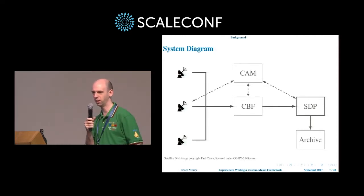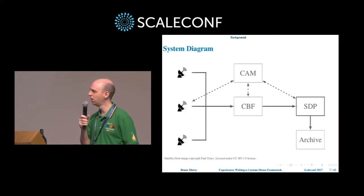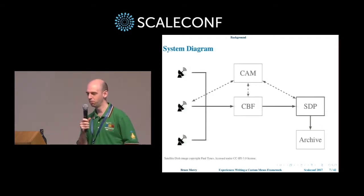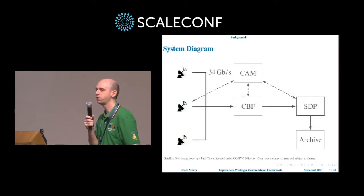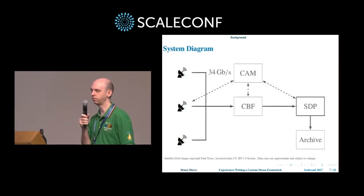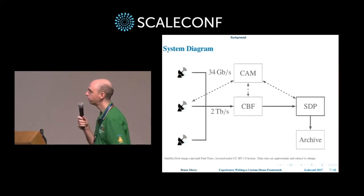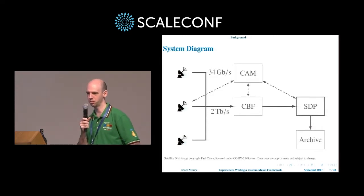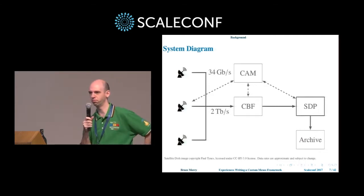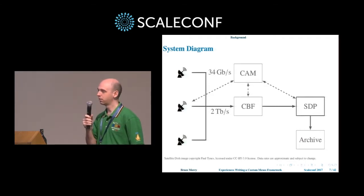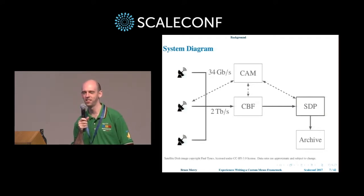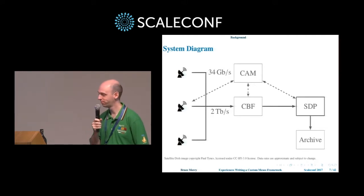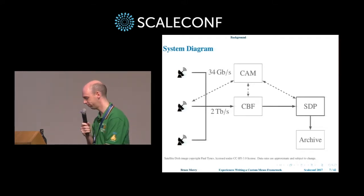You might be wondering what on earth am I doing at ScaleConf? All the other talks: 100 million users here, 100 million websites there, billion tables here. We don't have 100 million users — there aren't that many astronomers keen for this data. What we do have, however, is a lot of data. Each of these dishes is digitizing 34 gigabits a second of data. Multiply that by 64 dishes and you're talking about 2 terabits a second flowing off these dishes. That's somewhere around 4 billion photos a day, just to put it in terms you might be used to. It's very localized, very high-density data.